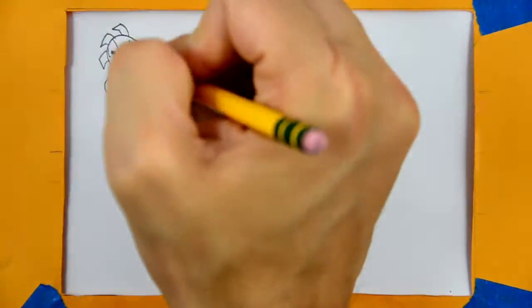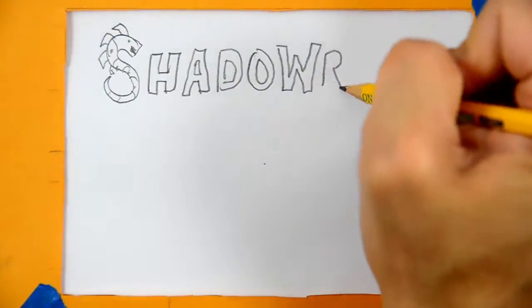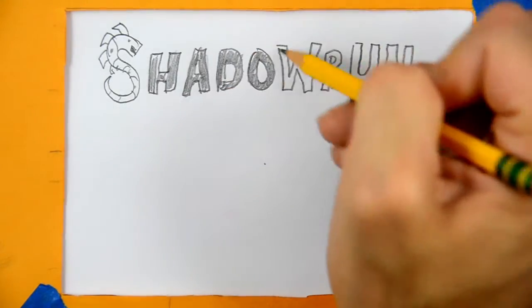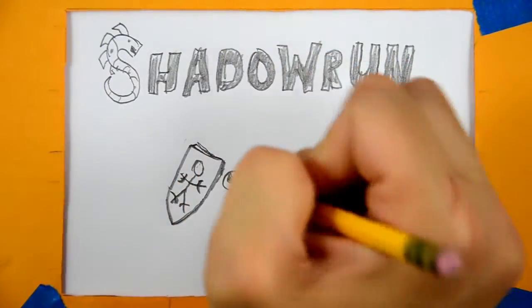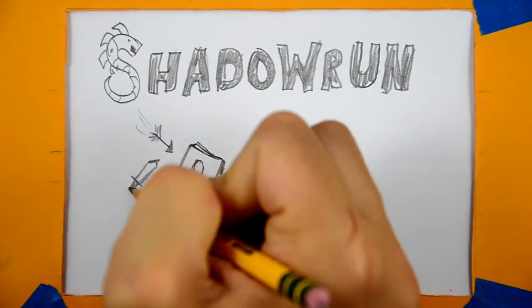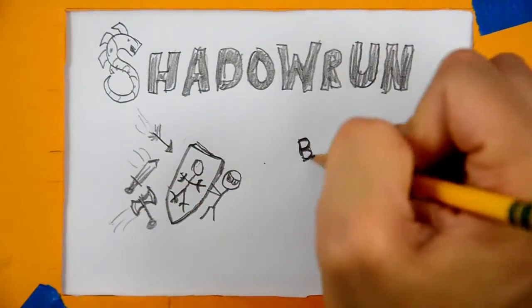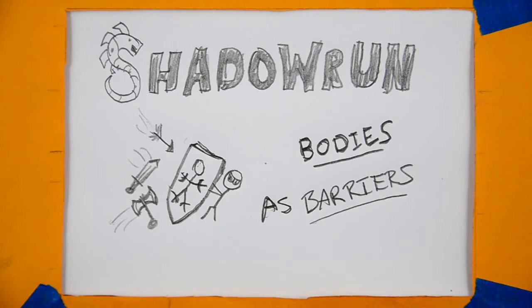In Shadowrun 5th edition, a character can hide behind all sorts of things for cover, and sooner or later, someone is going to want to use the body of another living thing as a meat shield. In order to be prepared, you will need the rules for using bodies as barriers.